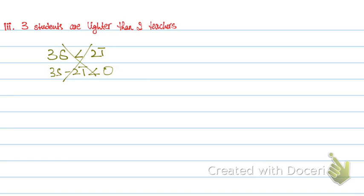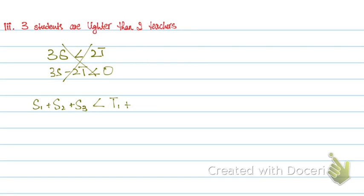But this is in fact wrong, because 3s minus 2t means thrice the weight of one particular student minus twice the weight of one particular teacher. What the question is saying is 3 students — these are 3 different students — are lighter than 2 teachers. So what I need here is S1 plus S2 plus S3 for 3 different students, and T1 plus T2 for 2 different teachers.